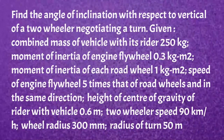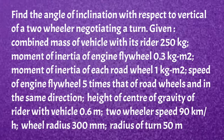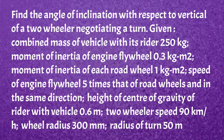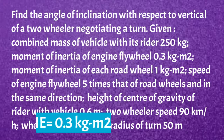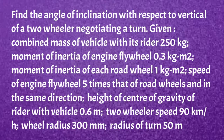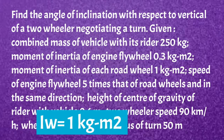Now first I will read the given problem: Find the angle of inclination with respect to vertical of a two-wheeler negotiating a turn. Given: combined mass of vehicle with its rider is 250 kg, so m = 250 kg. Moment of inertia of engine flywheel IE = 0.3 kg·m². Moment of inertia of each road wheel IW = 1 kg·m².